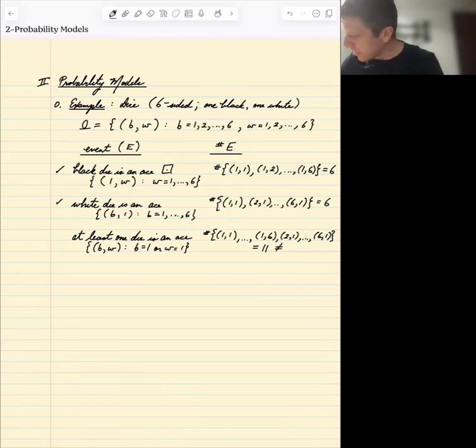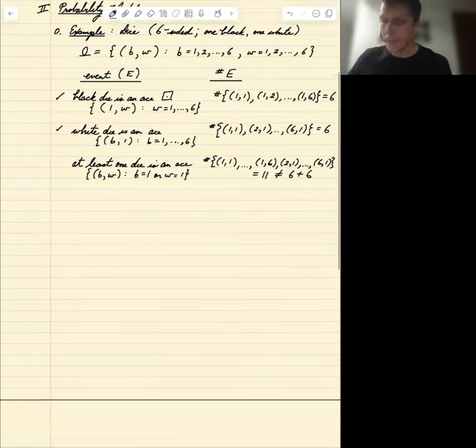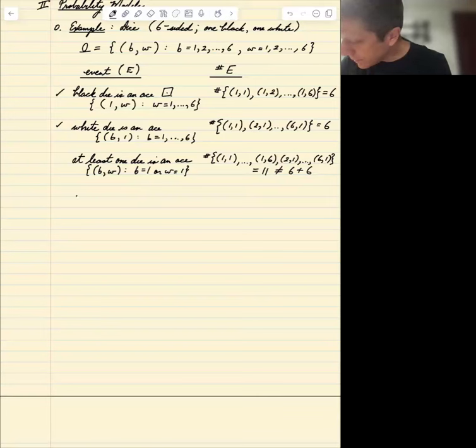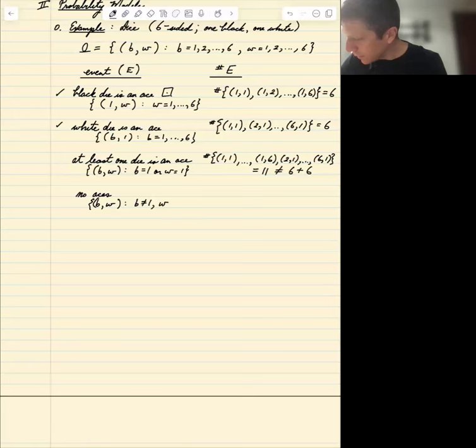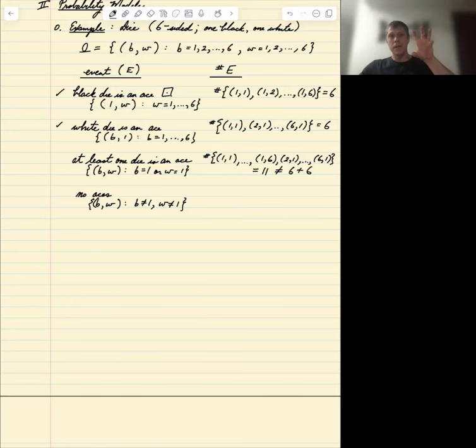So note that this does not equal six plus six. And how about no aces? No aces. So this is the set BW such that B is not equal to one, W is not equal to one. Well, how do we count this? Well, one way to count this is to say, I already have the number in which at least one is an ace. And I know there's a total of 36. So one way to count this is to say, there's all total possibilities is 36. 11 are no good because they contain an ace. 25 left.